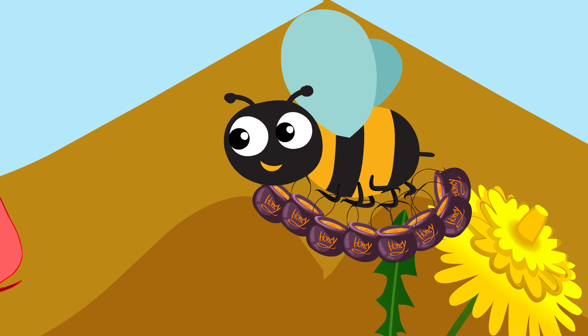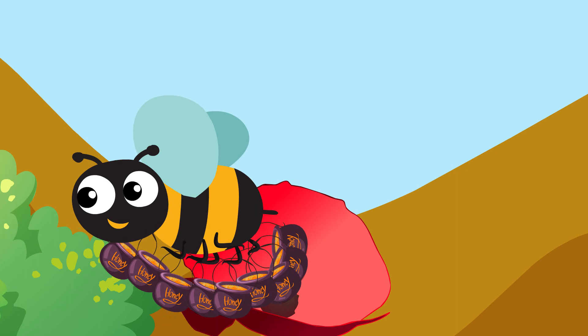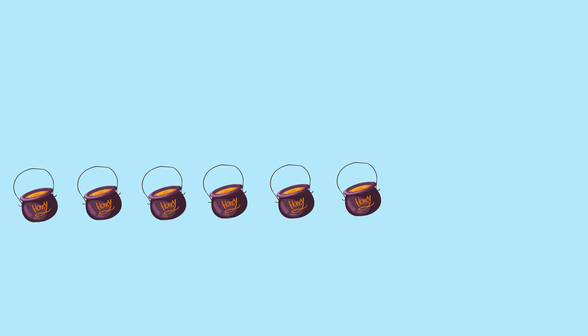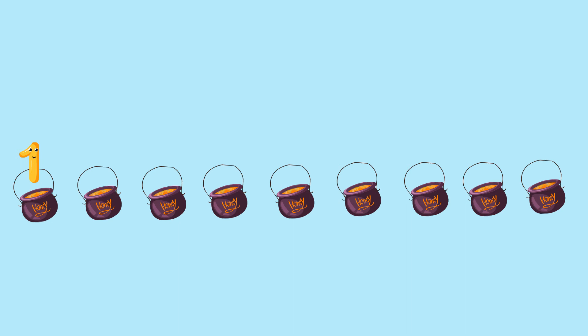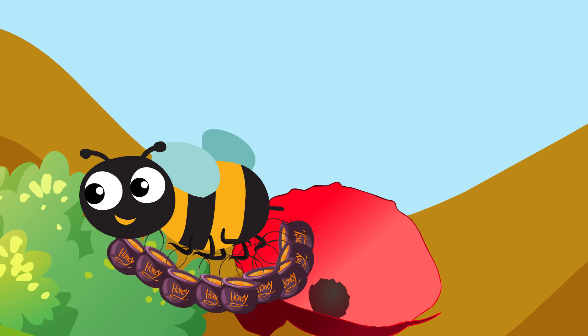1, 2, 3, 4, 5. 1, 2, 3, 4, 5, 6, 7, 8, 9. Now the bee has nine buckets of honey.